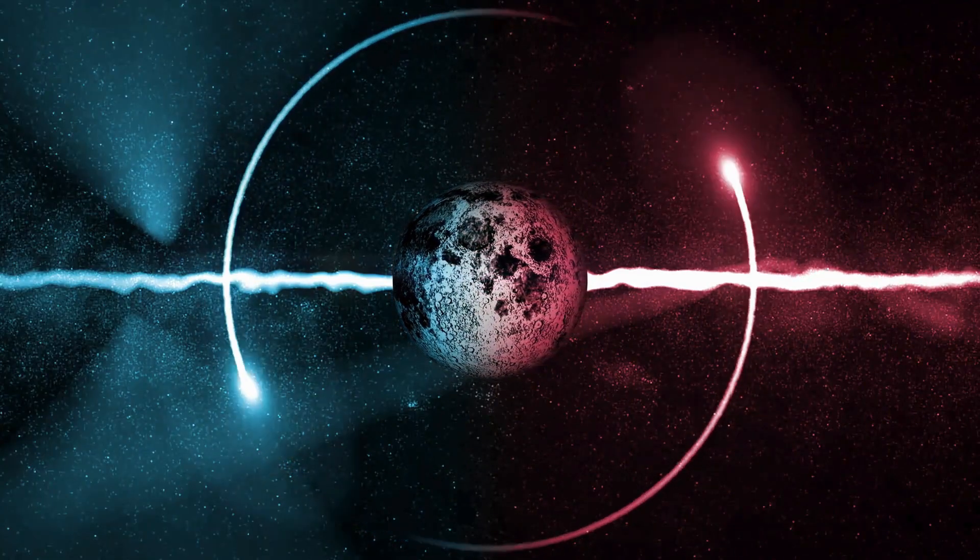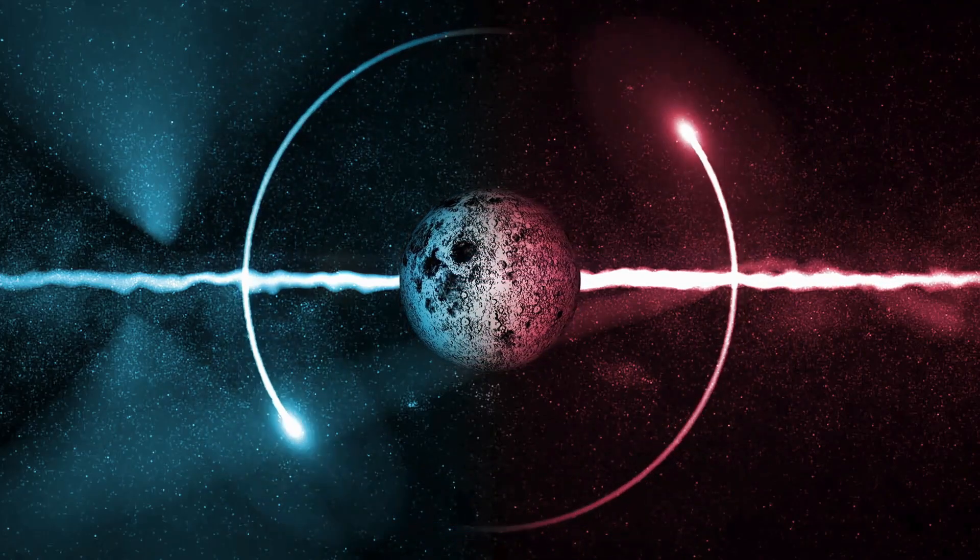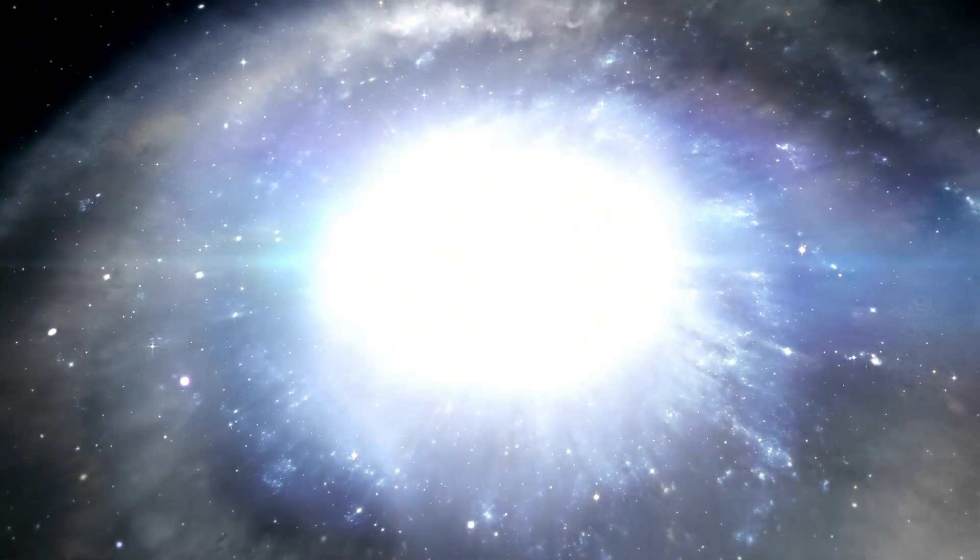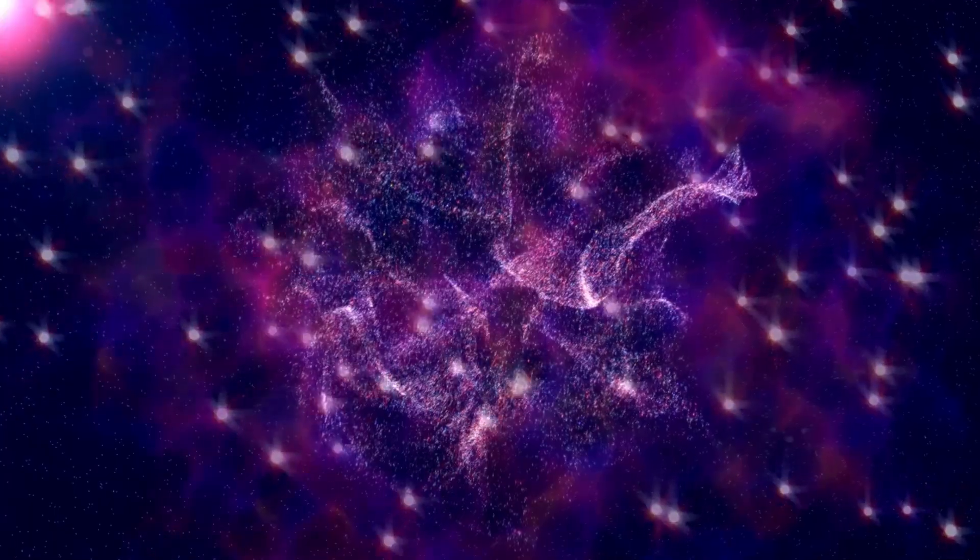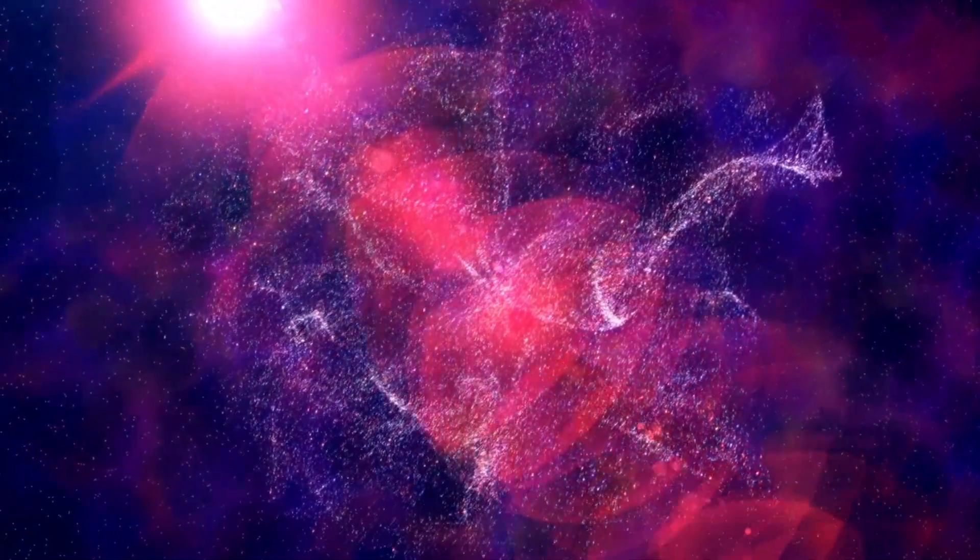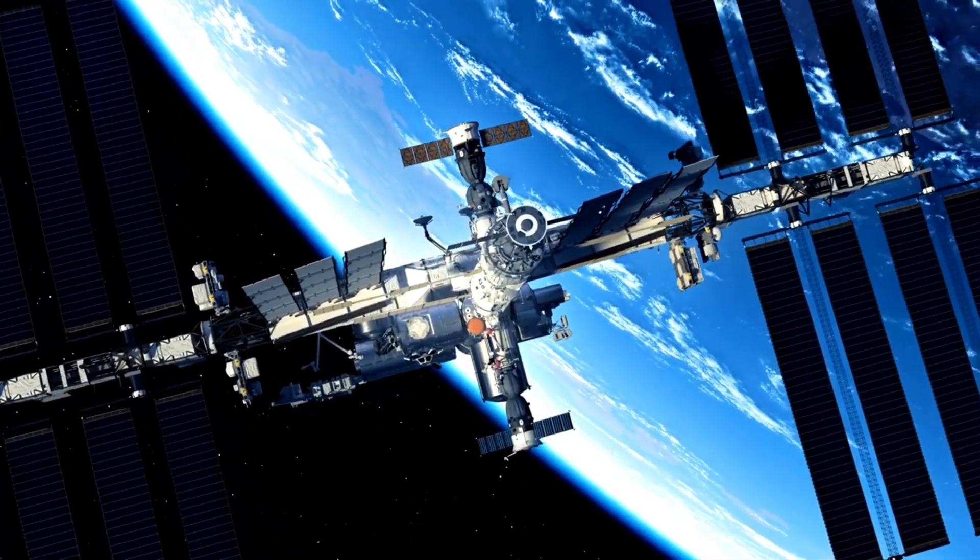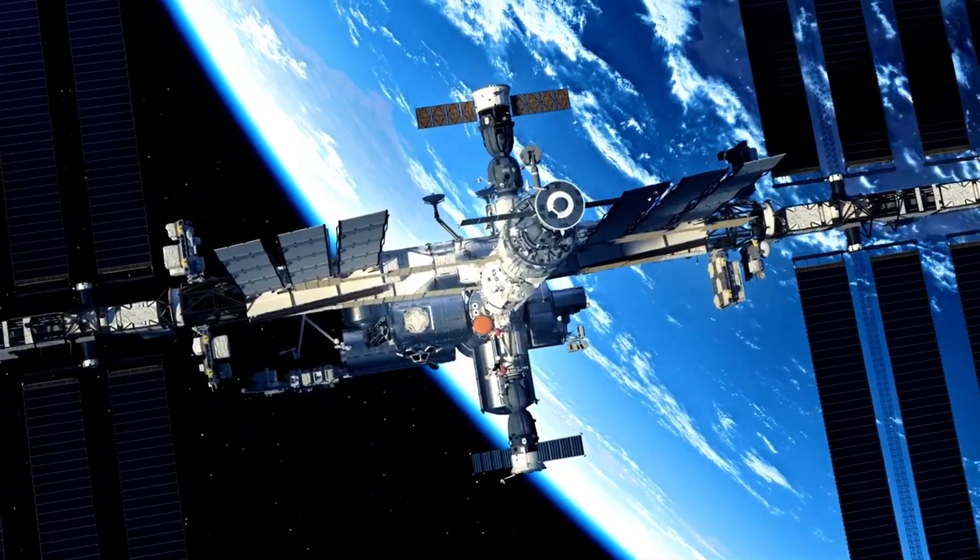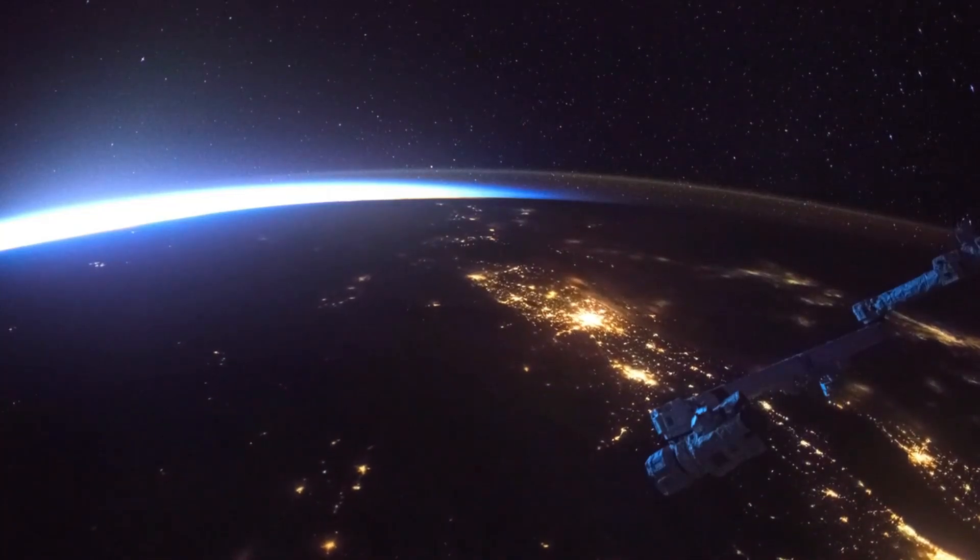However, that wasn't all. As the assessment continued, another astounding discovery emerged. Oumuamua's erratic behavior began to puzzle even the most seasoned astronomers. It didn't behave like anything that had been observed before. Instead of following the expected gravitational laws as most celestial objects do, Oumuamua exhibited behavior more in line with a comet than an asteroid. Yet it lacked the visible gas tail or dust cloud that would typically be associated with comets.